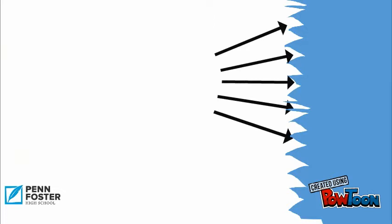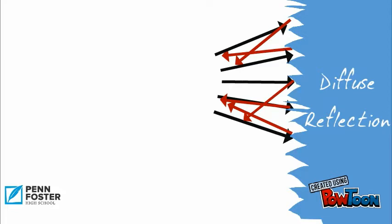Waves hitting rough surfaces are reflected back in different directions, creating a jumbled mess. This is called a diffuse reflection.